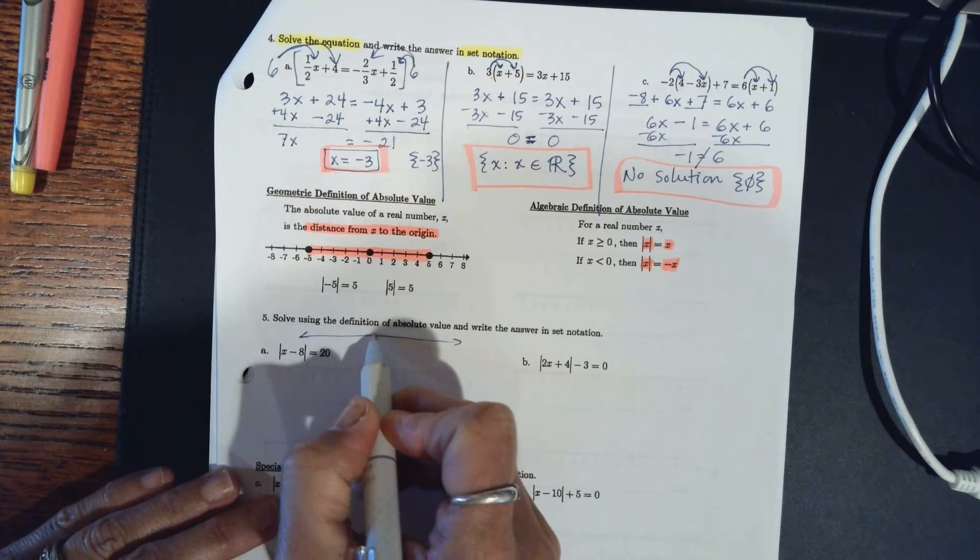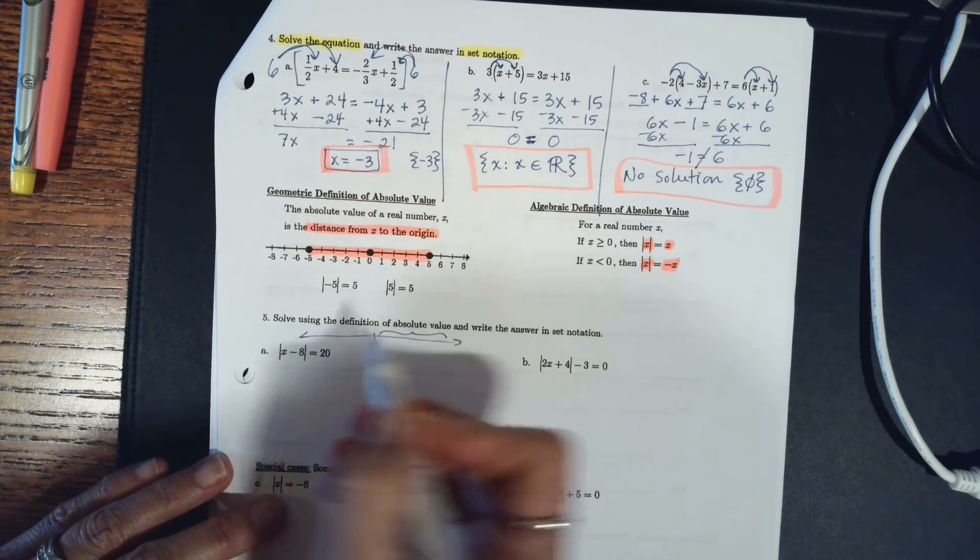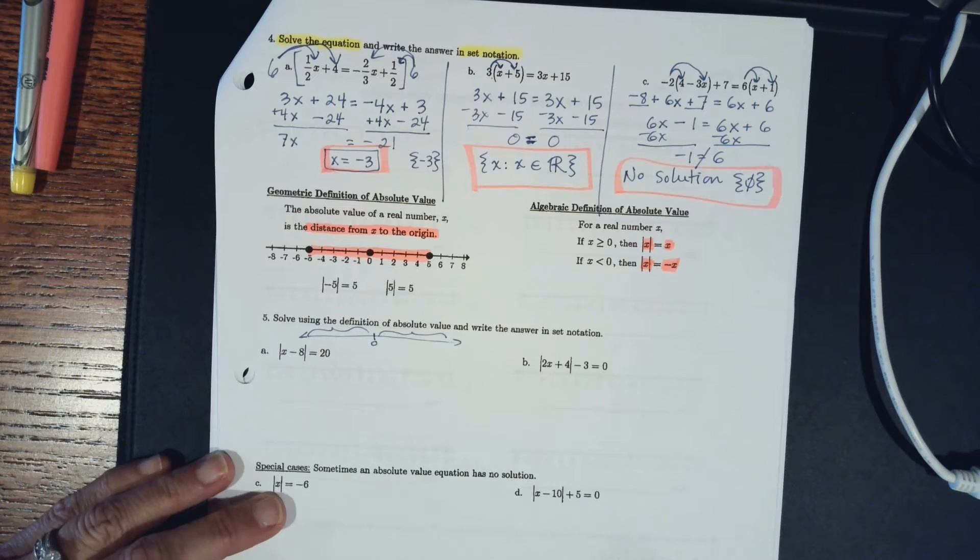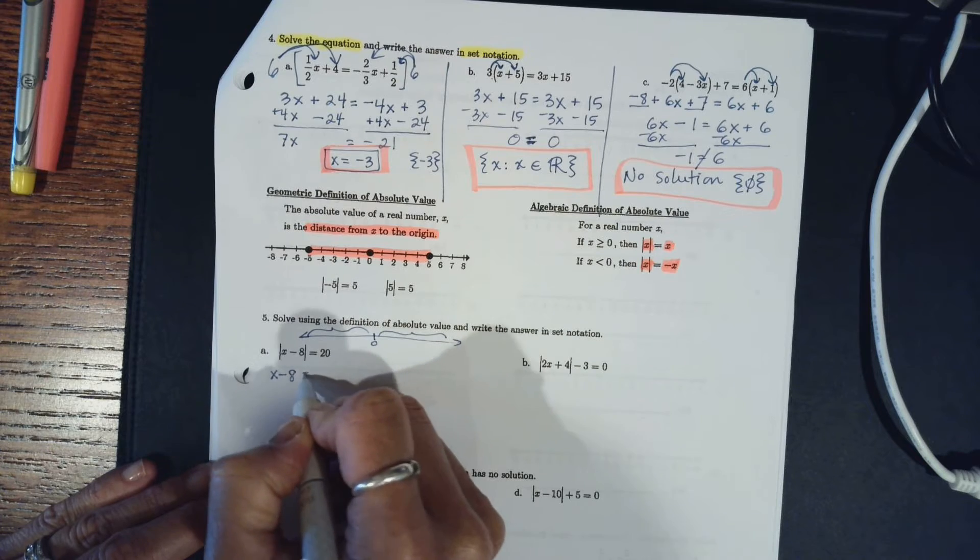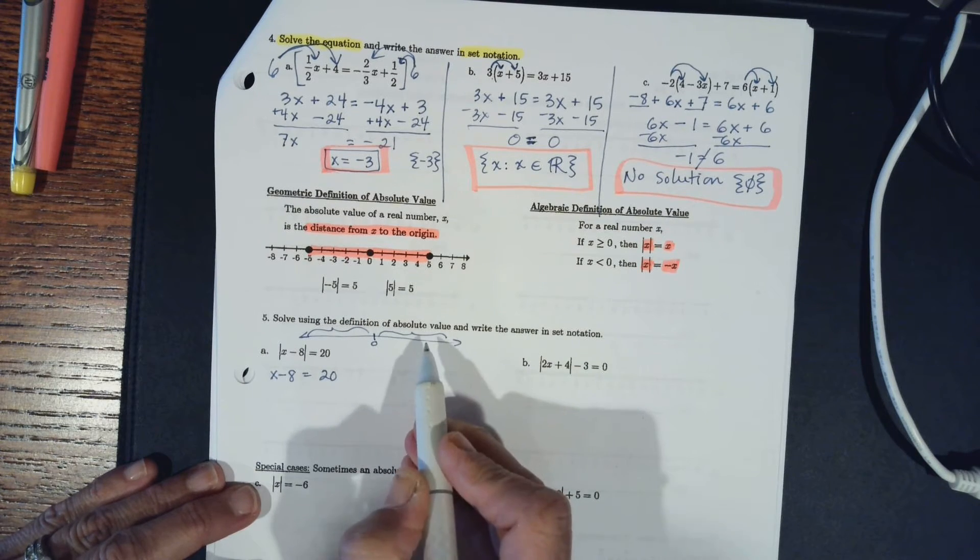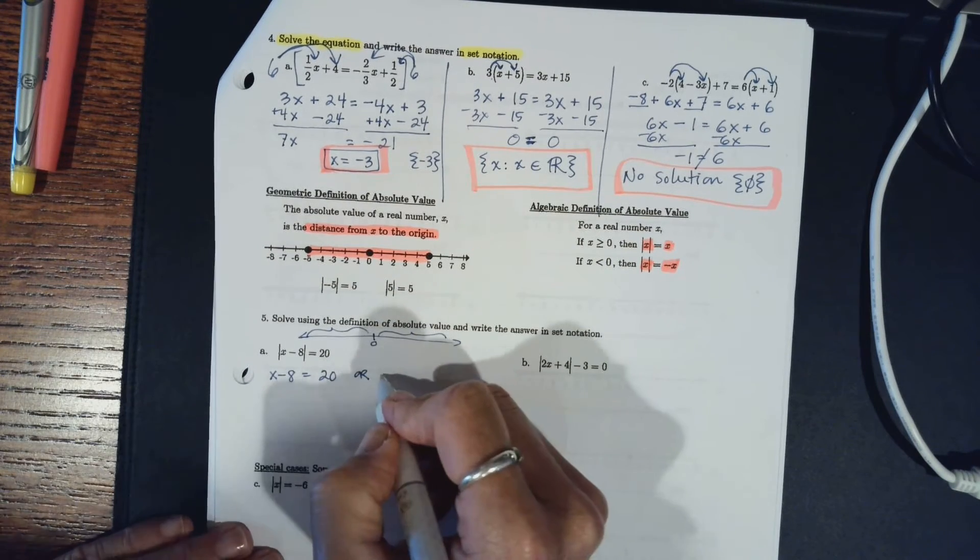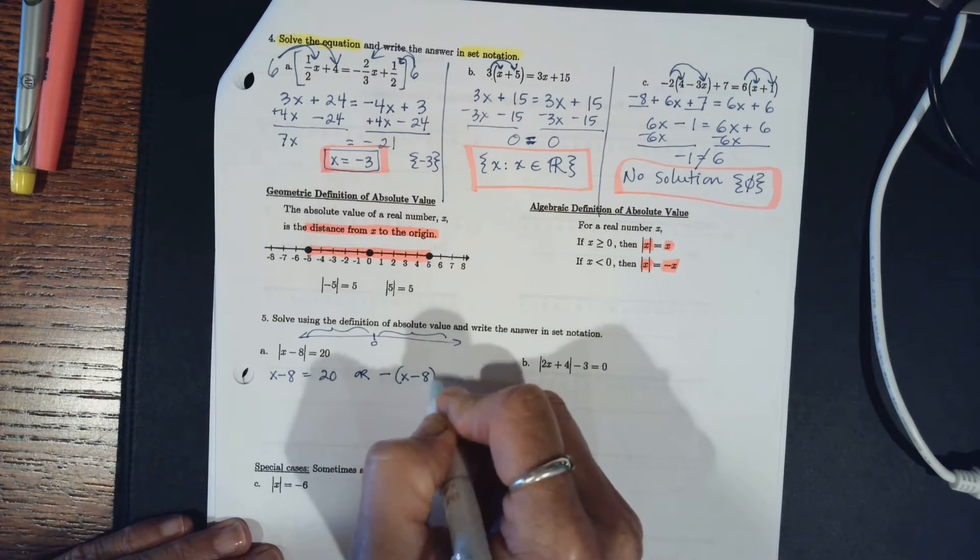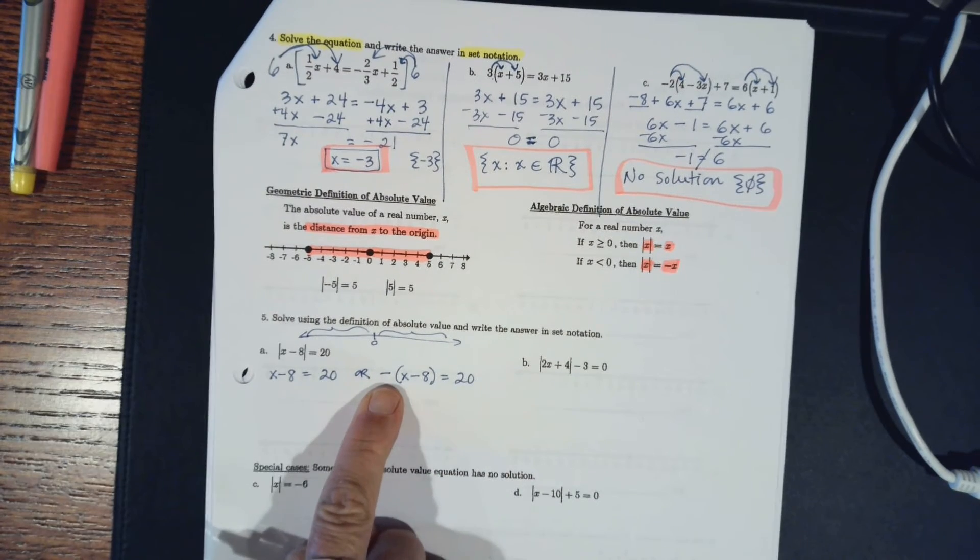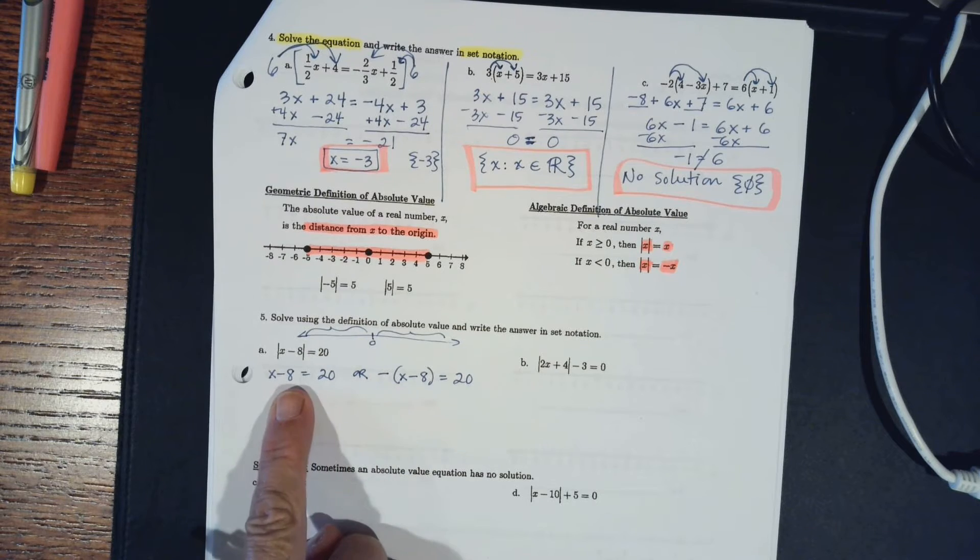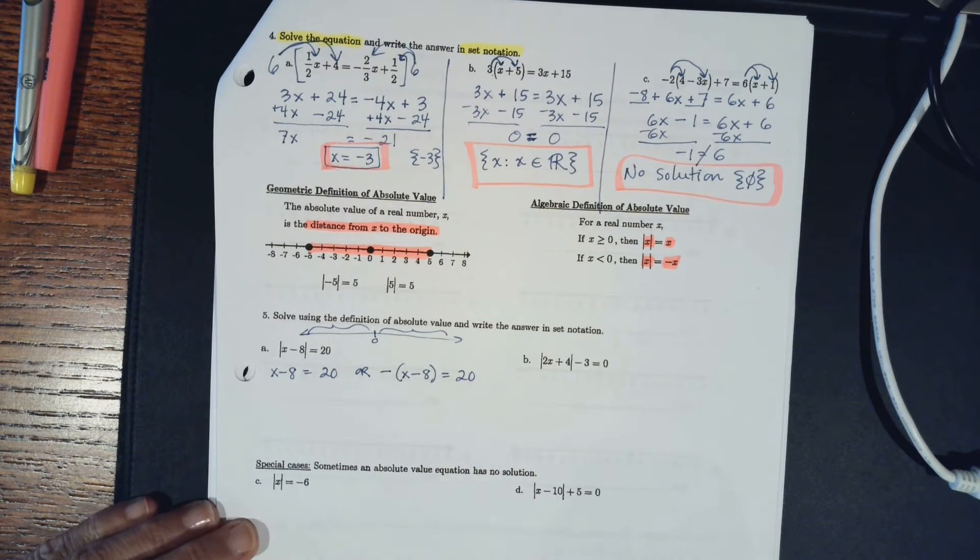If you had a number line and here we're zero, then x minus 8 could be this far, but it could also be this far, and that could both be 20. So you have two solutions. What you must write each time you do these is x minus 8 equals 20. That's going to give you your right hand solution. Or to get the negative or the left hand solution, you're going to do it this way. The opposite side, that's the negative, is also equal to 20. You must do this step. This must be written.